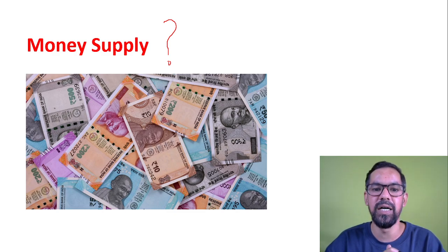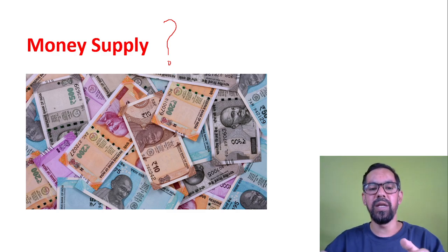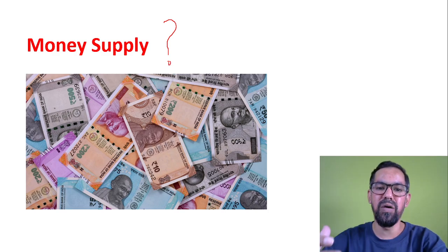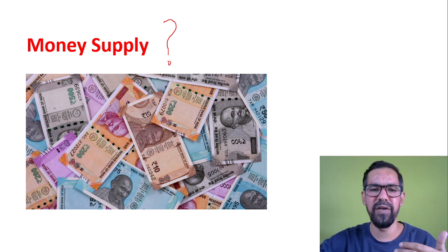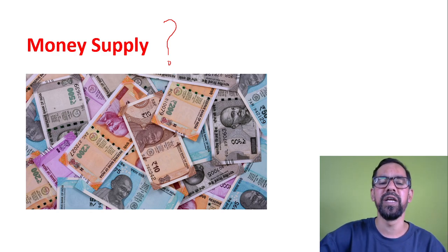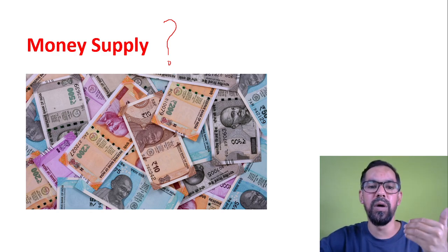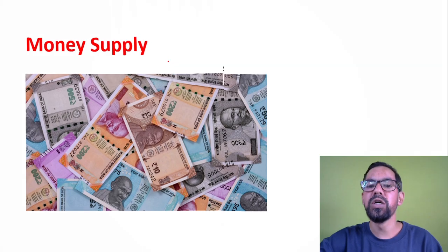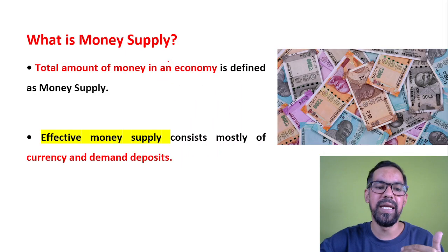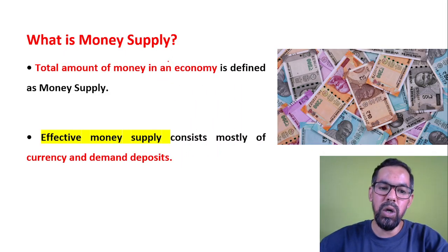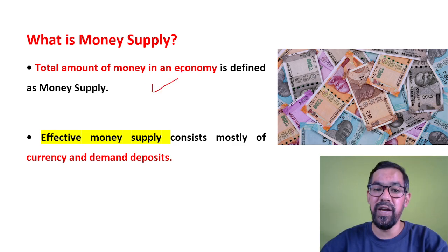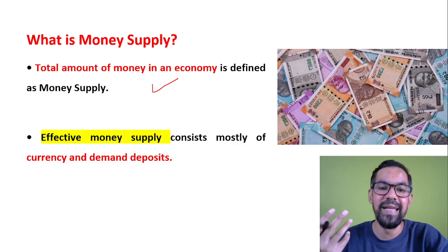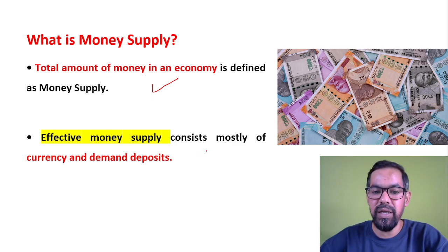The total sum of money which is used in different areas — by individuals, organizations, banks, and all — is generally part of money supply. A total amount of money in any economy is defined as money supply, and it is generally part of the legal tenders. Effective money consists mostly of currency and demand deposits.